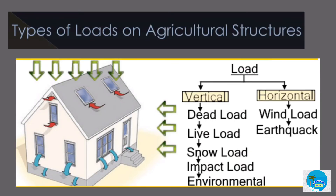Types of loads on agricultural structures. Vertical loads include dead, live, and impact loads. Horizontal loads include wind and earthquake loads. Other loads include longitudinal loads, such as tractive and braking loads.